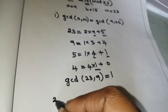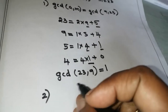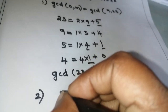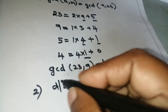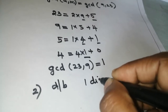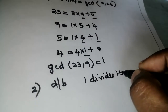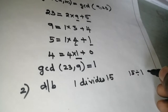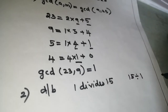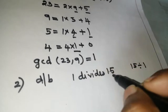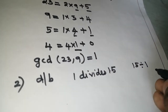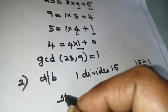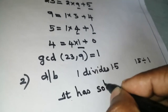Next step: find out the solution. Solution is possible — check here. The condition is D divides B. That is, 1 divides 15 — check here. 15 is completely divisible by 1. So 1 divides 15 — check. Therefore, it has a solution.